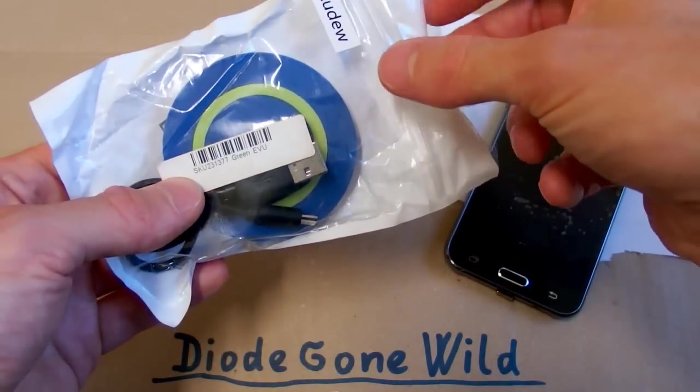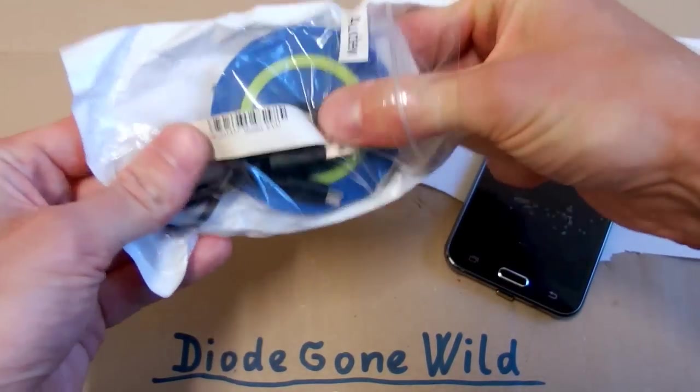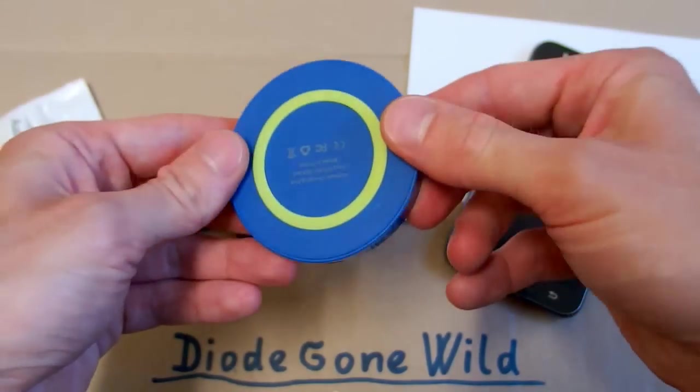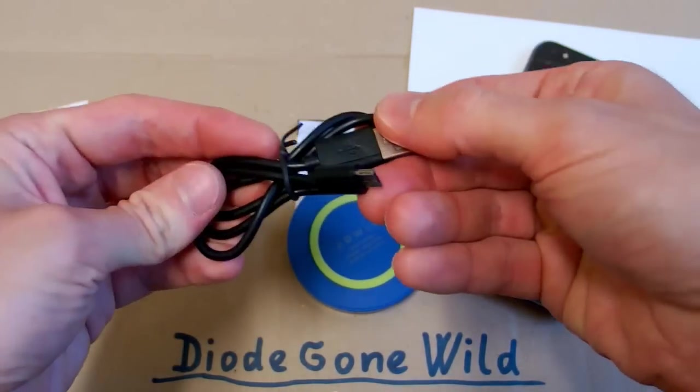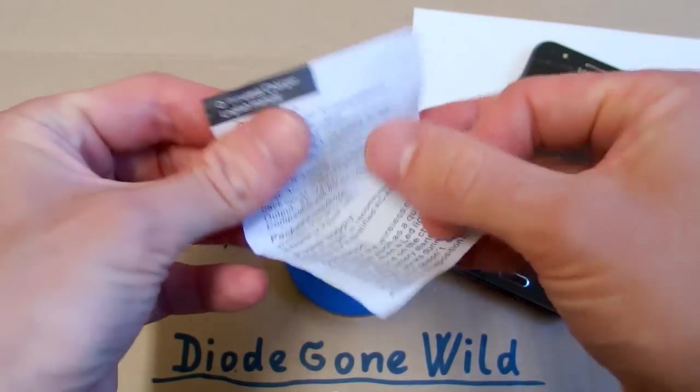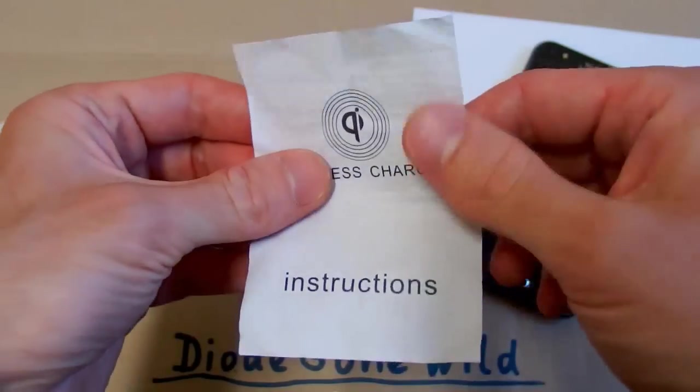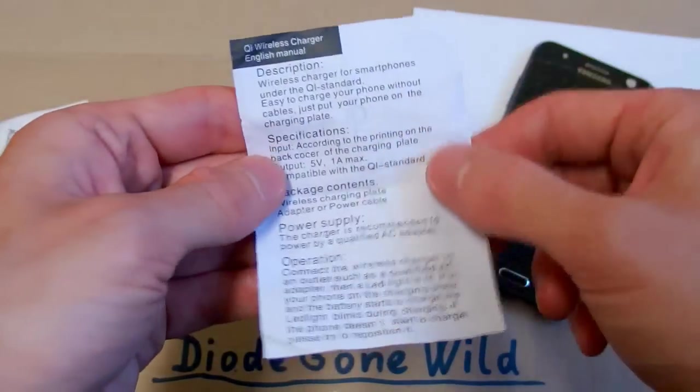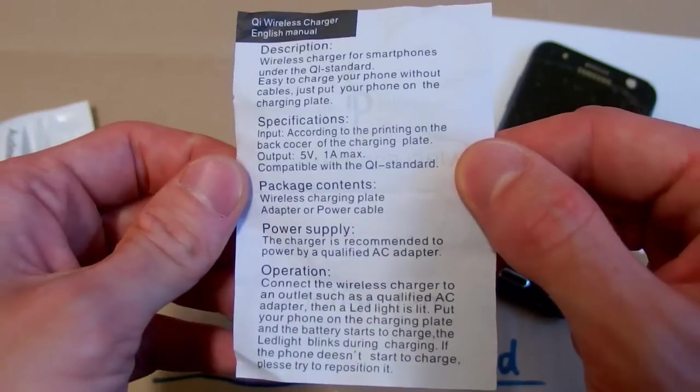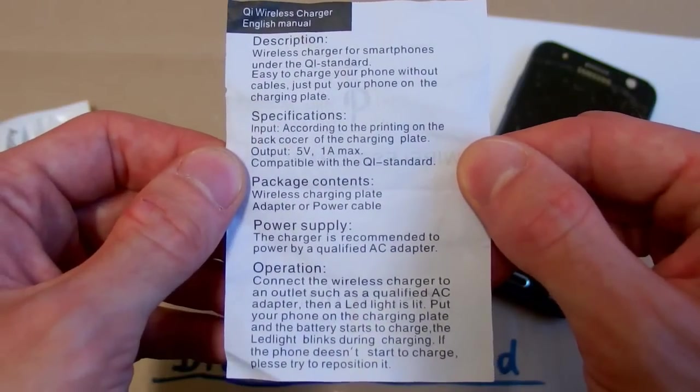This one is the transmitter. There is the pad, the cable and some manual. A very simple one. If you want to read it, you can stop the video for a while.